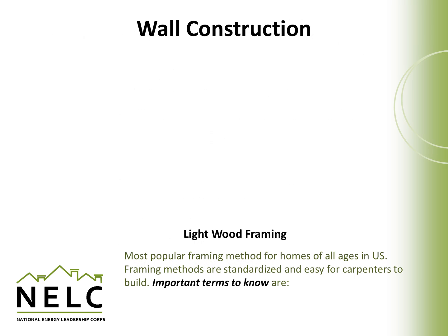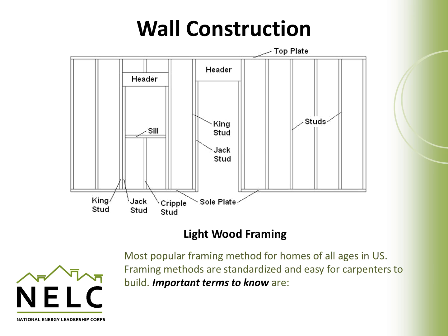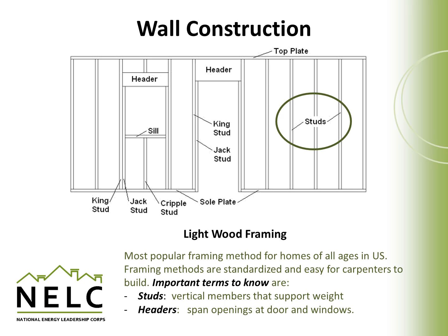Light wood framing is the most popular method to build homes in the United States. It's very versatile and allows for accessible materials to be used, and framing methods to build a wall are fairly standard and consist of fairly recognizable elements. Once a carpenter learns the basics, it's very easy to get a set of dimensions and build a wall. Some of the more important terms to know that will apply to the energy performance of a wall include the wall studs, which are the vertical members that support the weight of floors above. Their spacing and thickness is very important. Headers are used to span openings but can also take up a lot of wood space in the wall and displace where we can place insulation. They're usually located above windows and doors and help span that opening as a structural member.